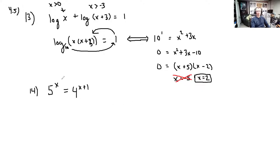Let's take logarithms of both sides. Let's take, in fact, the log base 5 of both sides. So if I take log base 5 of the left side, what do I get? I get just x. And if I take the log base 5 of the right side, by the laws of logarithms, I can bring this x+1 down. This is (x+1) times the log base 5 of 4. Now that's just a number. So this is nice.